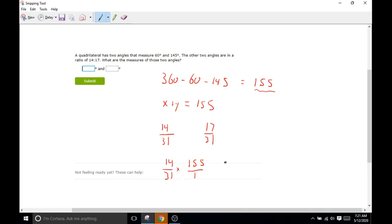So we're going to do 14 times 155, which is going to be 2170 over 31 times 1 is 31. And so 2170 divided by 31 is going to be 70. So x is going to be 70. So one of our missing angles is going to be 70.